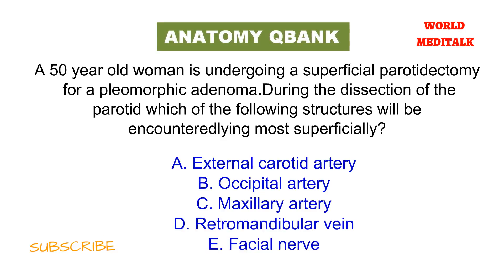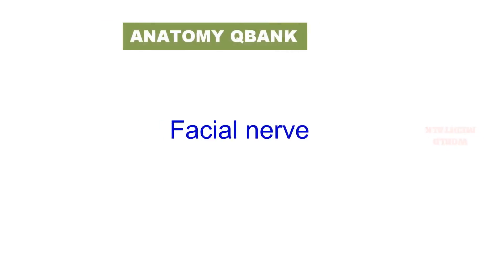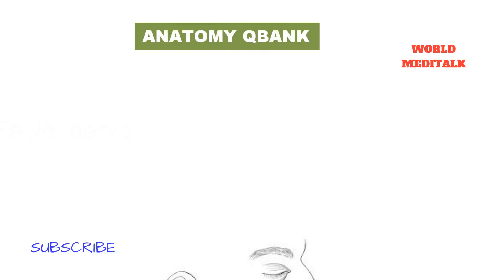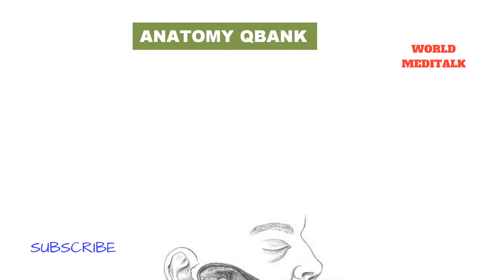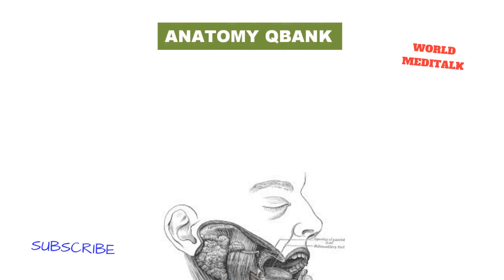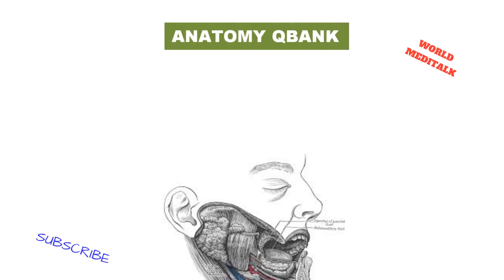Think about the most superficial structure on the parotid gland. The answer is facial nerve — the facial nerve is the most superficial structure in the parotid gland. Slightly deeper lies the retromandibular vein, with the arterial layer lying most deeply.